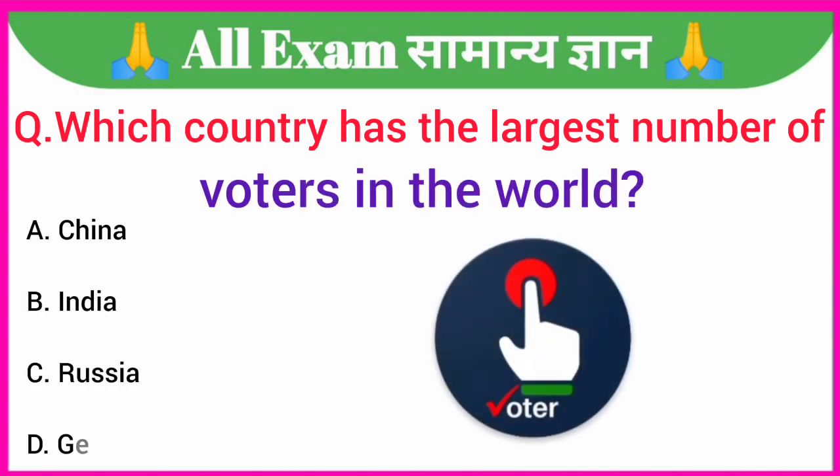Which country has the largest number of voters in the world? A. China, B. India, C. Russia, D. Germany.